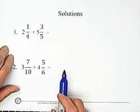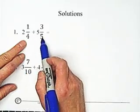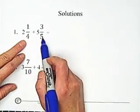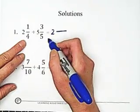Solutions. Find the least common denominator, 4 and 5. They don't have common factors, so the least common denominator is 20. Just multiply these two.